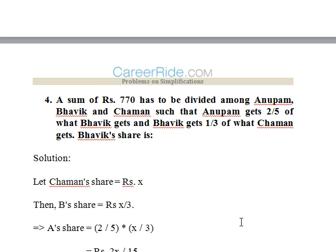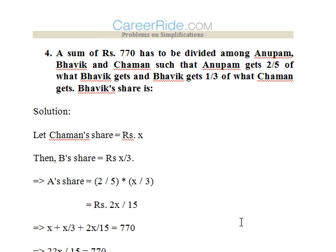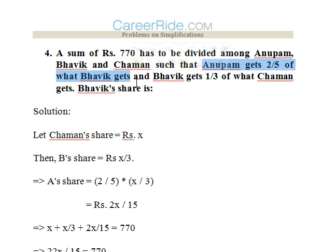Question four: A sum of ₹770 is to be divided among Anupam, Bhavik, and Chaman such that Anupam gets 2/5 of what Bhavik gets, and Bhavik gets 1/3 of what Chaman gets. What is Bhavik's share? Let Chaman's share = x. Then Bhavik's share = x/3, and Anupam's share = (2/5) × (x/3) = 2x/15.